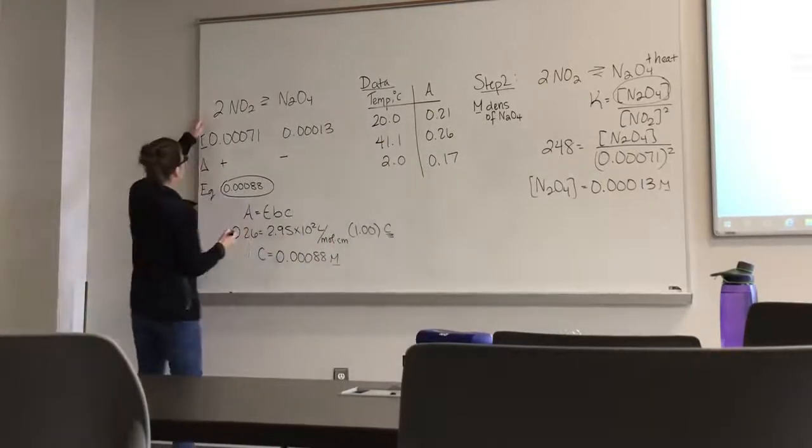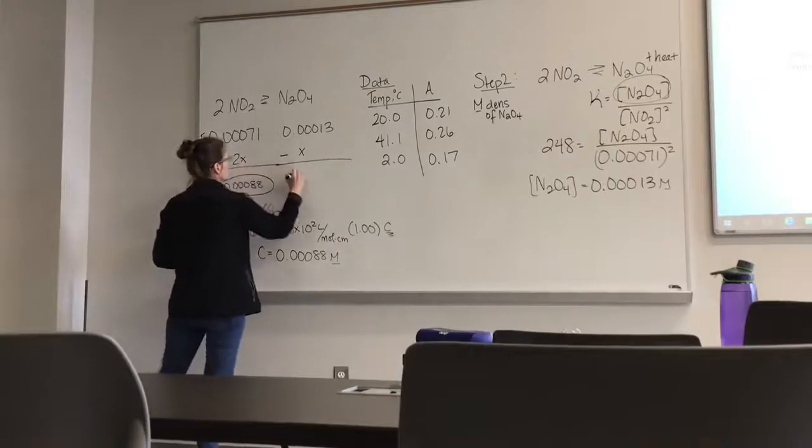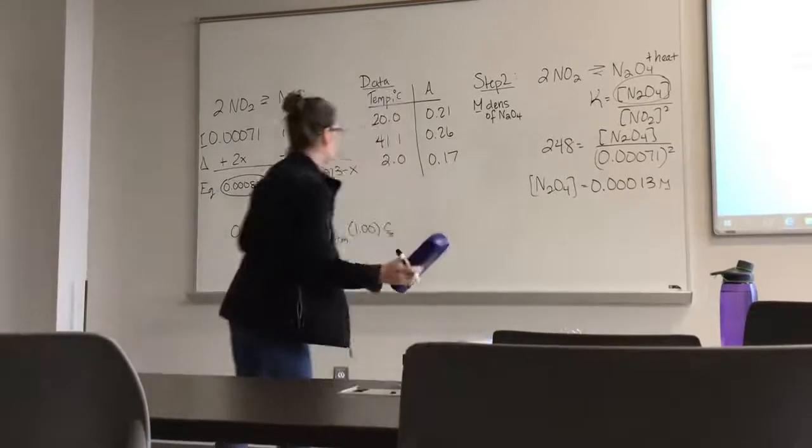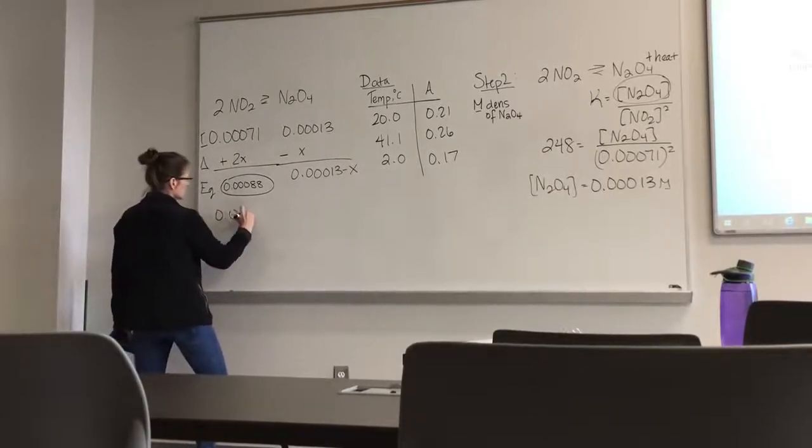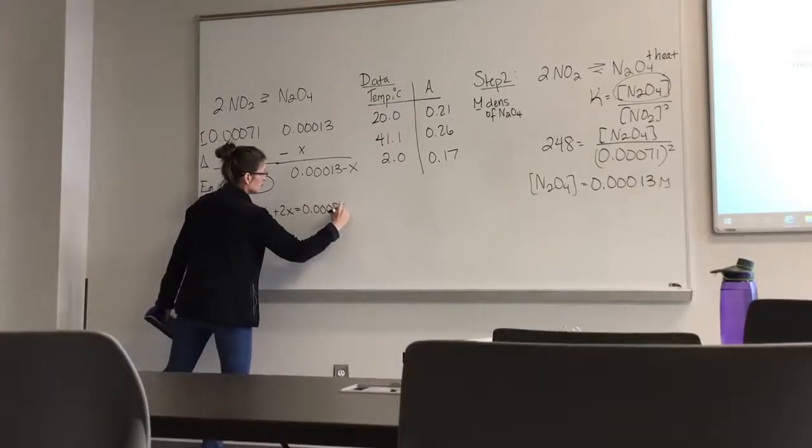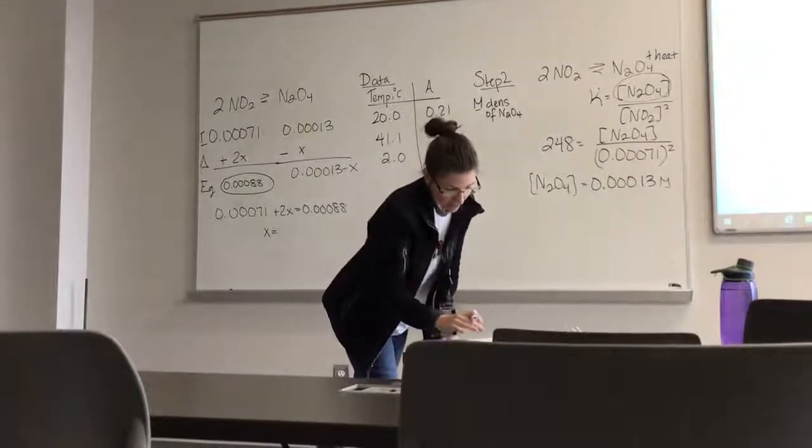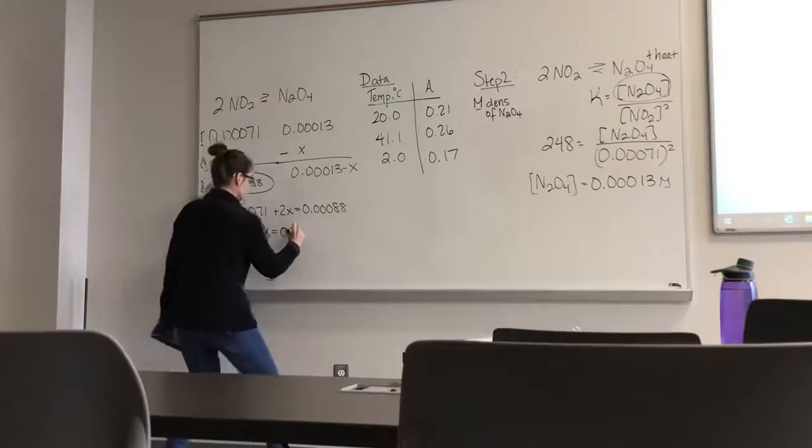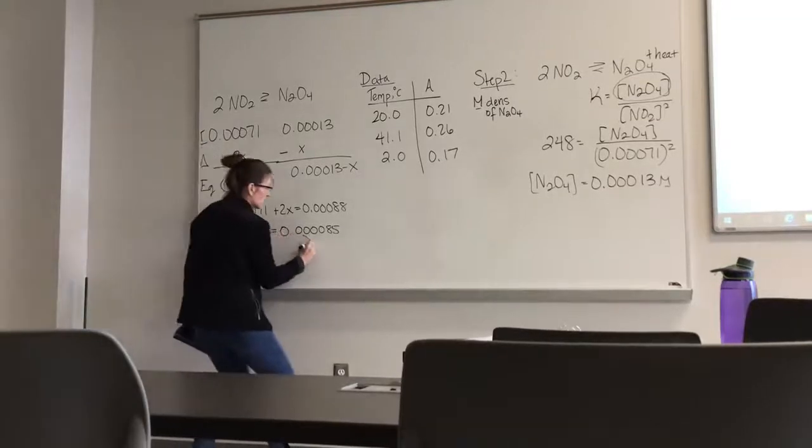So essentially then, when we look at this, notice this would be plus, it's got 2, 2x here, minus x here. So my equilibrium values, I've got 0.00013 minus x, so we've got to find some x there in order to figure that out. I'm going to erase this to give us a little more space, and then here we know that 0.00071 plus 2x is equal to 0.00088. And then I solve for x, you do some math and solve for x for that, and when I solve for x, I end up with 0.000085. That's what my x is.